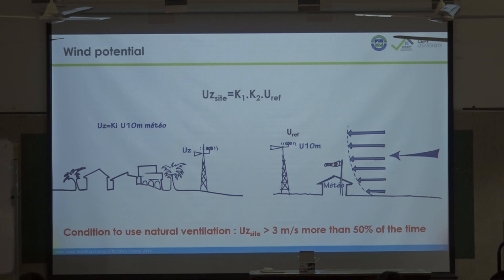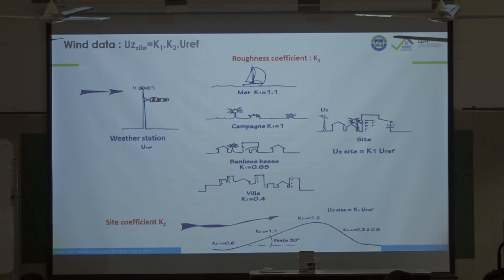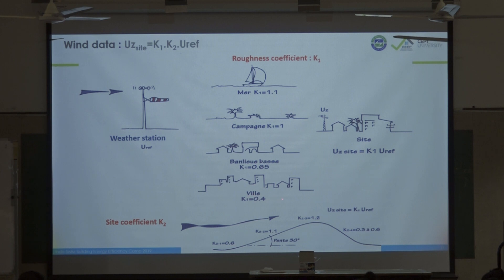k1 is a roughness coefficient — it depends on whether you are at the sea, in a rural area, or in a dense area. In a dense area like Ahmedabad, this coefficient is 0.4, meaning you can get only 40 percent of the wind potential recorded at the airport.